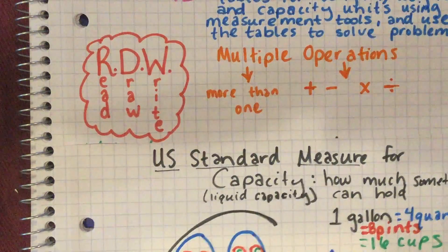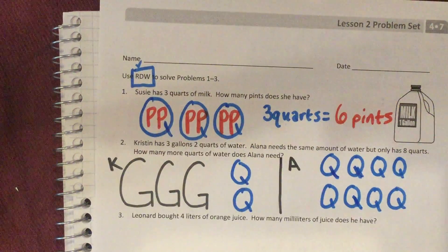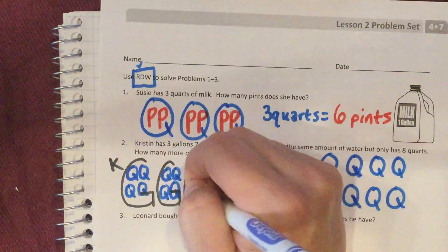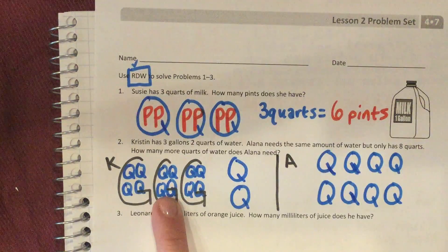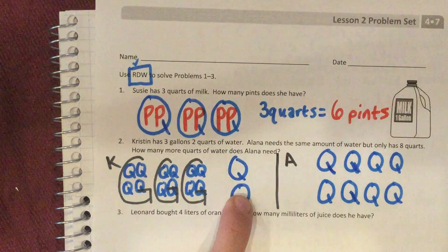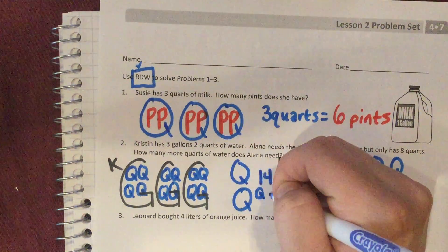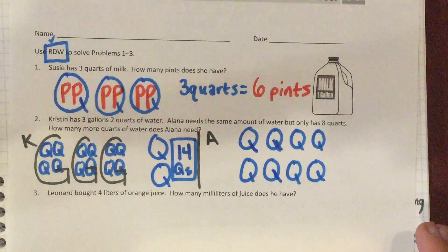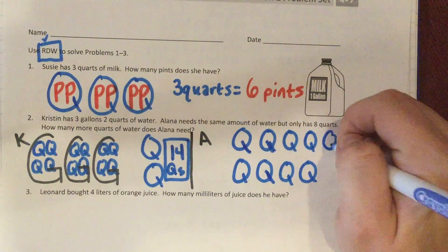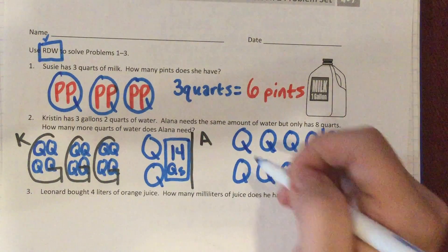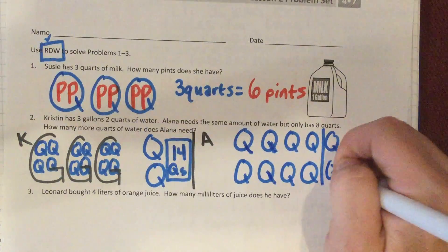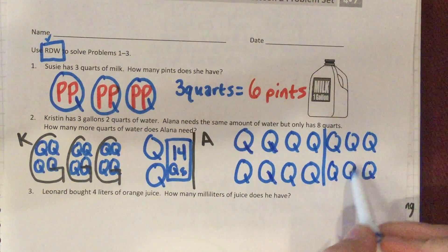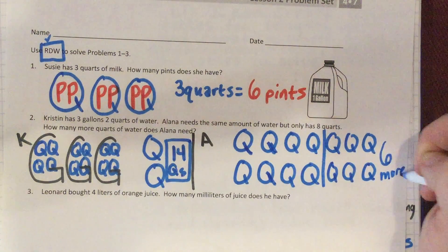A gallon has four quarts, so three gallons equals four, eight, twelve quarts, plus Kristin's two extra quarts makes fourteen quarts total. Alana only has eight, so she needs to get from eight to fourteen. Counting up: nine, ten, eleven, twelve, thirteen, fourteen — that's six more quarts. Alana needs six more quarts.